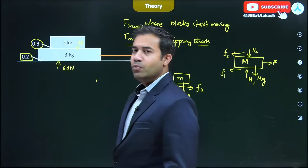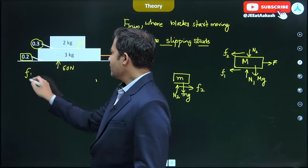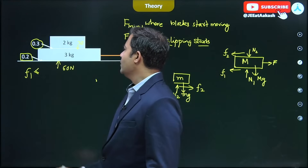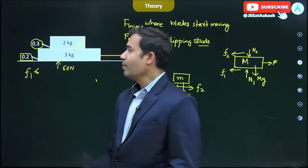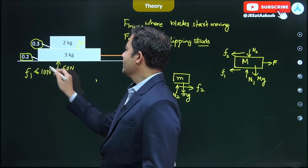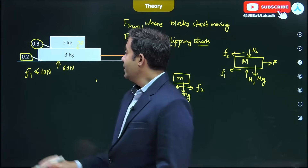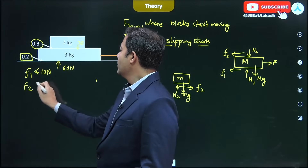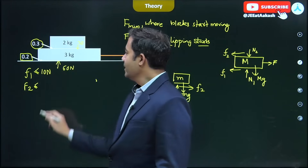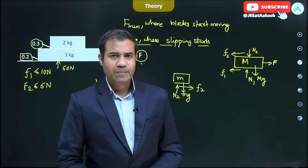F1 and F2 have their limiting values. The normal at the lower contact is 50 Newtons and at the upper contact is 20 Newtons. So F1 with respect to the ground must be less than or equal to mu times normal: 0.2 times 50, which is 10 Newtons. And F2 must be less than or equal to mu times normal: 0.3 times 20, which is 6 Newtons. These are the limiting values.